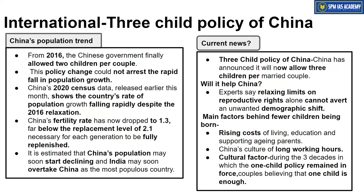Another major factor is cultural change. Over the past 40-50 years of implementing One Child Policy, the mindset of Chinese people has fundamentally changed. Now people are more comfortable with one child — it has become part of their culture. For three to four decades they followed this policy, and now couples believe one child is enough. Even with an official policy allowing two or three children, people are not choosing to have more. When culture changes, policy alone cannot reverse it, and that is the problem China is currently facing.